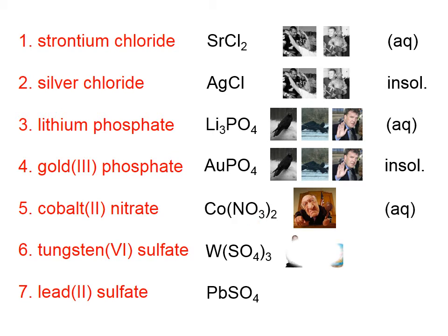How about number six? There's the sulfate ion. It tends to form soluble compounds unless paired with Hg₂²⁺, barium ion, strontium ion, or lead-2 ion. That one is aqueous. There's another sulfate compound — and this time the sulfate is bonded with lead-2, so that is insoluble.